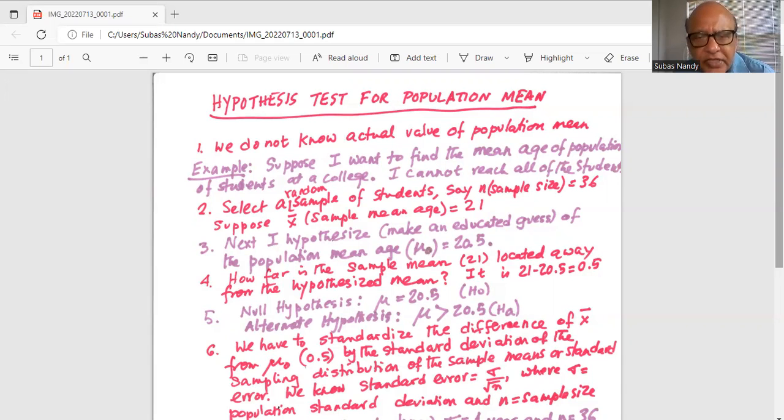How far is the sample mean which is 21 located away from the hypothesized mean? It is 21 minus 20.5 is equal to 0.5. So my null hypothesis is mu equal to 20.5.